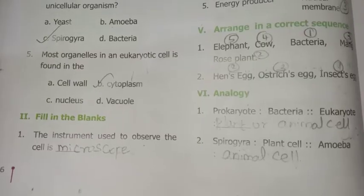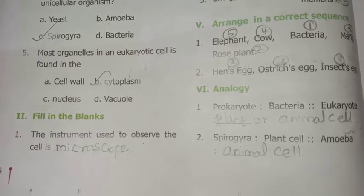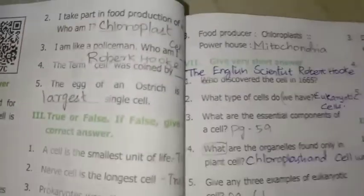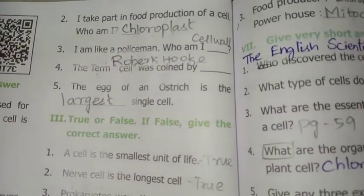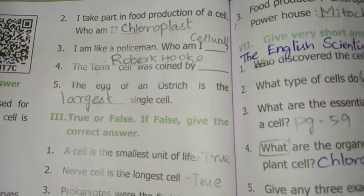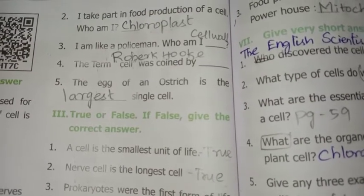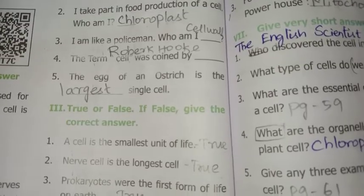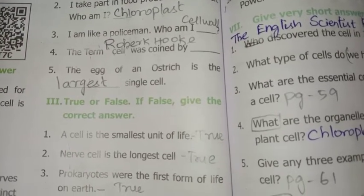Section 2 - Fill in the blanks: The instrument used to observe the cell is microscope. I take part in food production of a cell - who am I? Chloroplast. I am like a policeman - who am I? Cell wall. The term 'cell' was coined by Robert Hooke. The egg of an ostrich is the largest single cell.